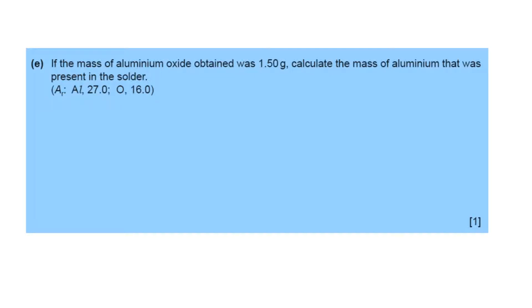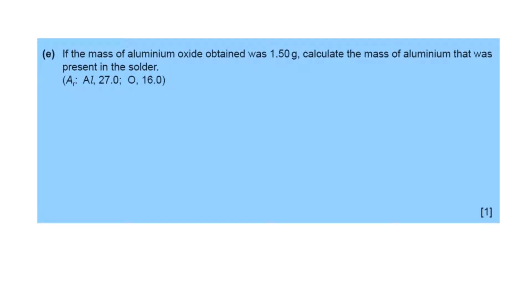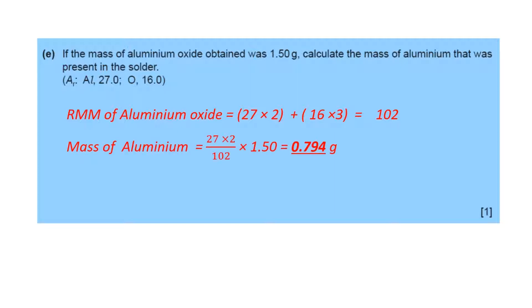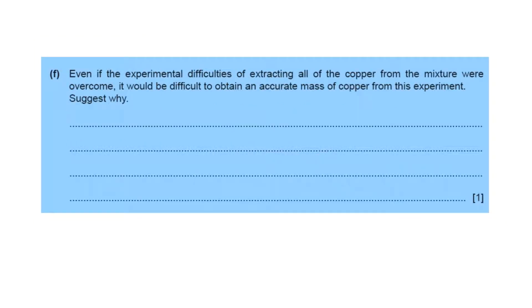If the oxide of aluminum was 1.5 grams, we have to calculate the mass of aluminum metal. For this calculation, first find the relative molecular mass of aluminum oxide, which is 102. From 102, we get aluminum as 2 times 27, that is 54. From 1.5, multiplying this, we get 0.794 grams.